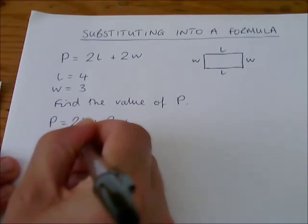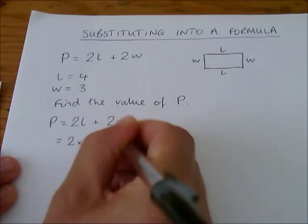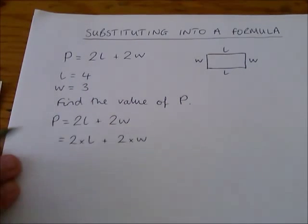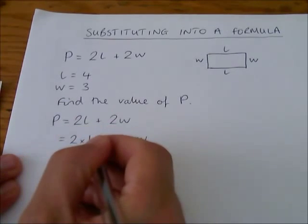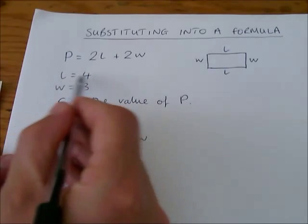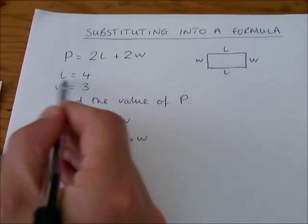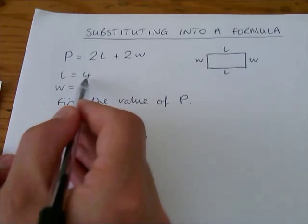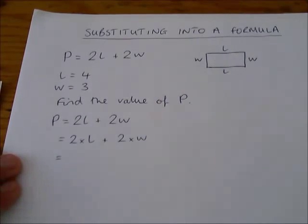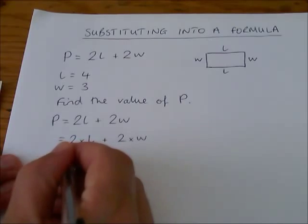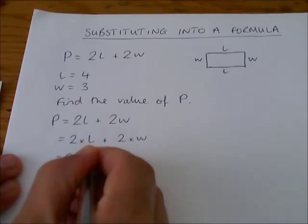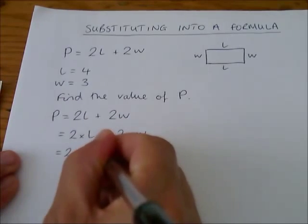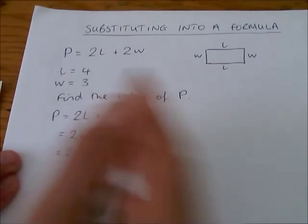So in here, where it says 2 times L and 2 times W, I'm just putting an extra step in there, I can replace that L with a 4. Just look there, just read it one more time. L equals 4. If I see L, I can replace it with 4, because they are equal, they are the same thing. So here I have 2 times, I'm going to replace that, substitute the L for a 4, and then I'm going to do the same with the W, the W equals 3.